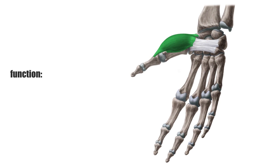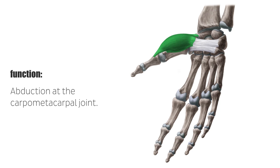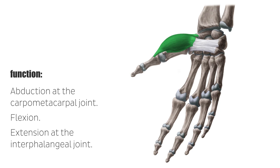The main function of each thenar muscle is associated with their names. The abductor pollicis brevis moves the thumb away from the hand, also referred to as abduction at the carpometacarpal joint. This muscle is also able to perform flexion of the thumb. Since the abductor pollicis brevis, adductor pollicis, and flexor pollicis brevis attach more distally at the thumb, they can also perform extension at the interphalangeal joint.